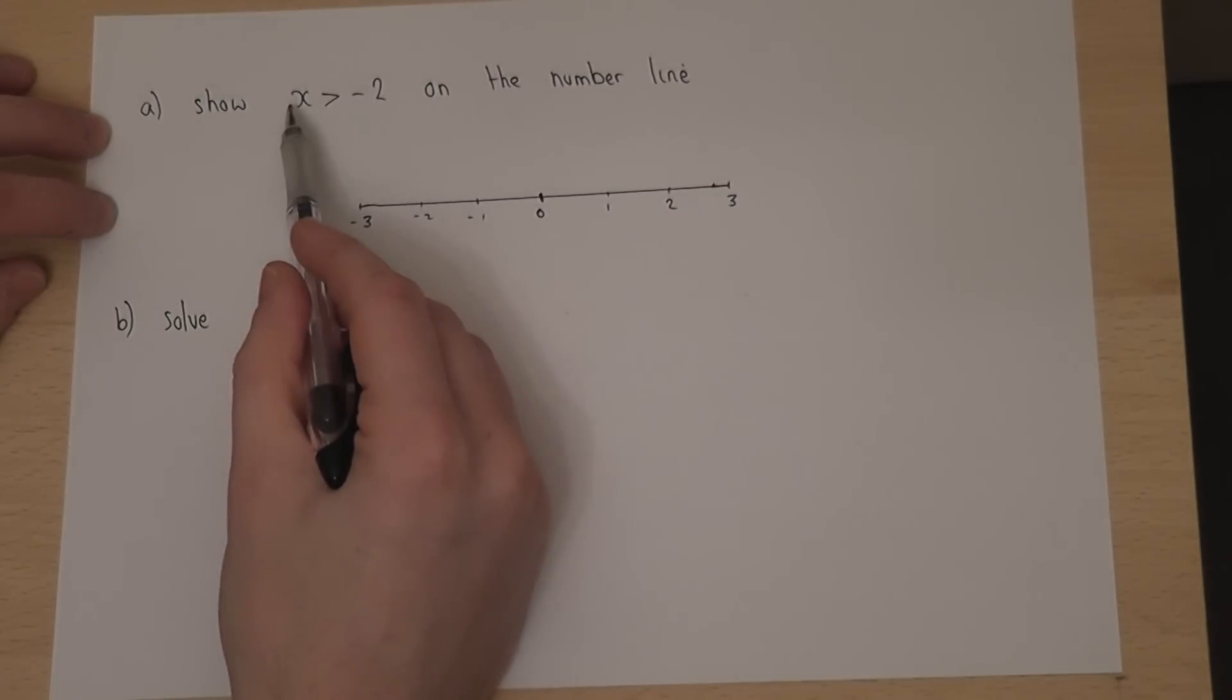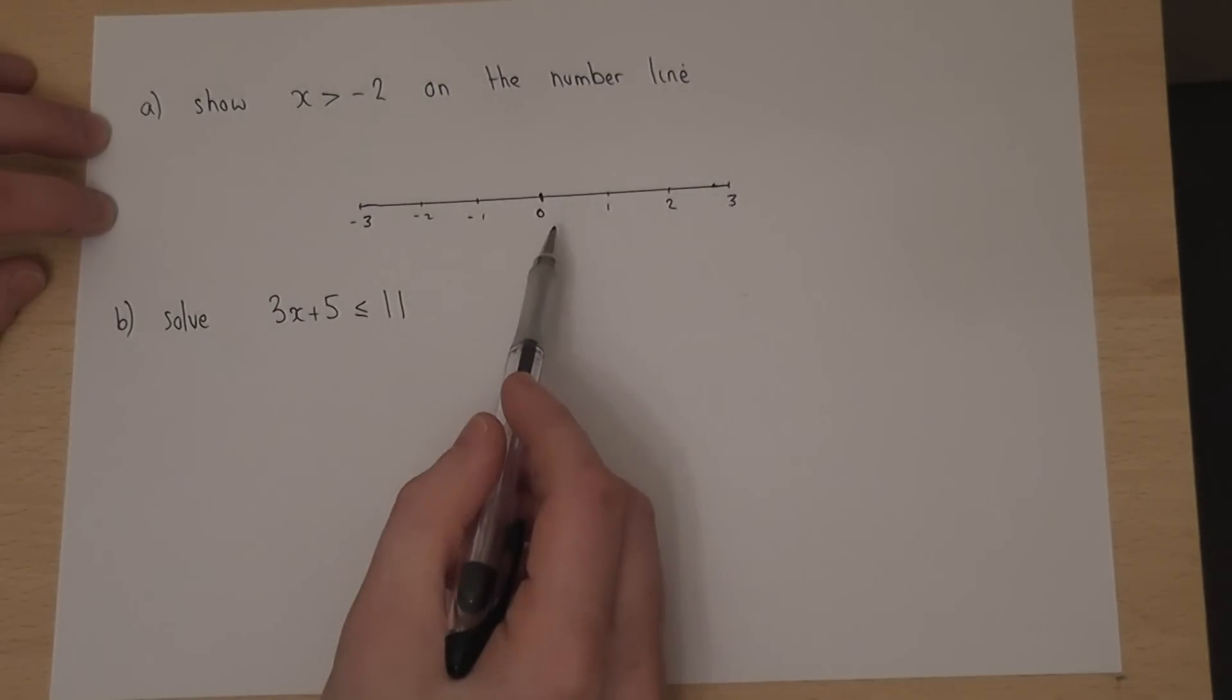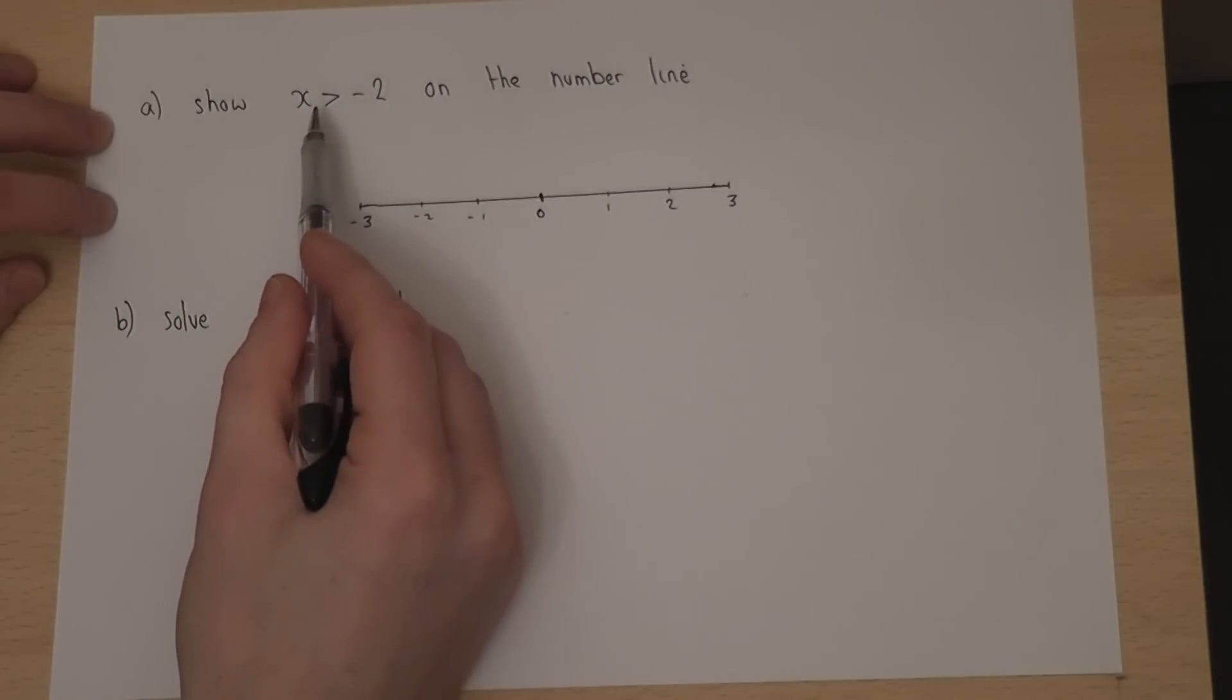Now, this just means that x can be any value bigger than minus 2, but we can't include minus 2.